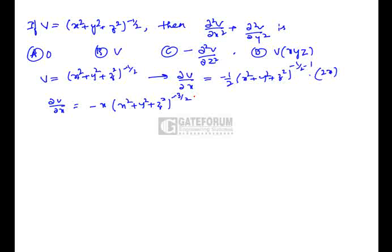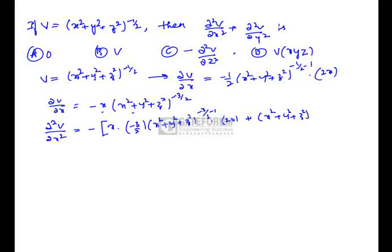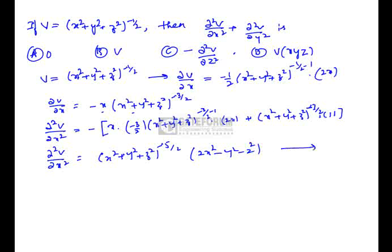Differentiating again partially with respect to x to get ∂²V/∂x², we apply the product rule (uv rule): x · (−3/2)(x² + y² + z²)^(−5/2) · 2x + (x² + y² + z²)^(−3/2) · 1. Simplifying, ∂²V/∂x² = (x² + y² + z²)^(−5/2) · (2x² − y² − z²). Call this equation 1.